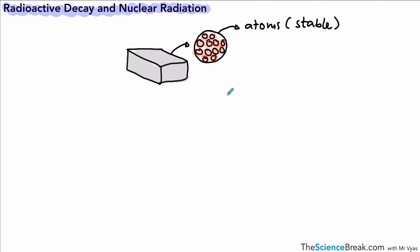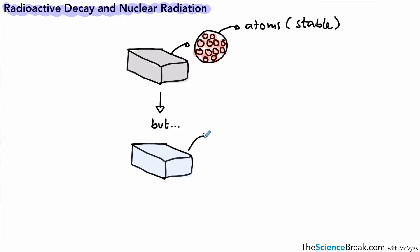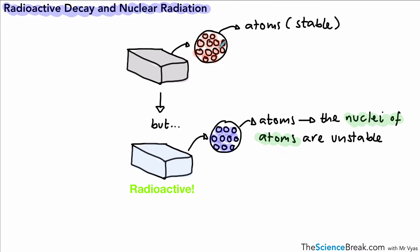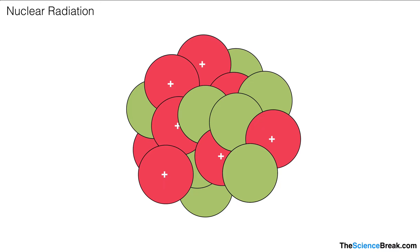The atoms in this element are stable. Now we could imagine another scenario where we have a different element. Here's a diagram of a different element, and we can look at the atoms again. But this time we might have a situation where the atoms are unstable. In fact, it's not the atoms we describe as unstable; it's the nuclei of the atoms that we say are unstable. Nuclei is plural for nucleus, so those nuclei could be described as being unstable, and we would describe the substance as being radioactive.